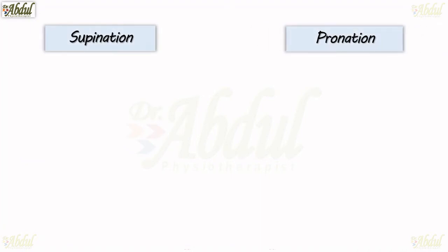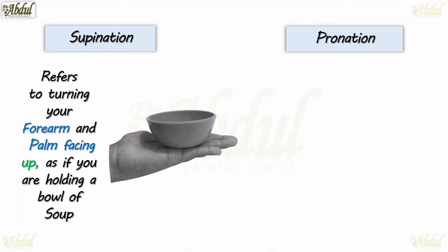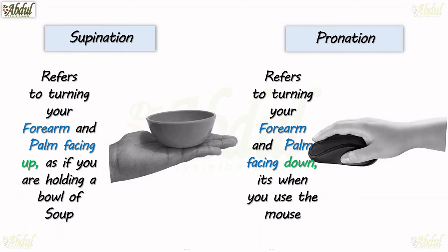Supination and its antagonistic movement is pronation. Supination refers to turning your forearm with the palm facing up, as if you are holding a bowl of soup — something like this. Pronation refers to turning your forearm with the palm facing down; it's like when you use a mouse — something like this. Supination and pronation.